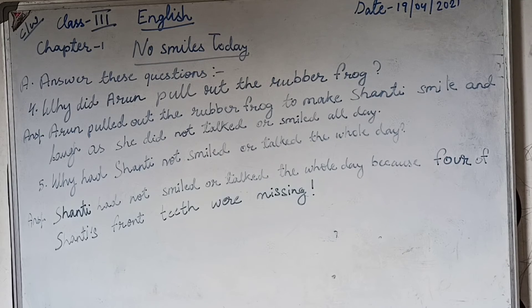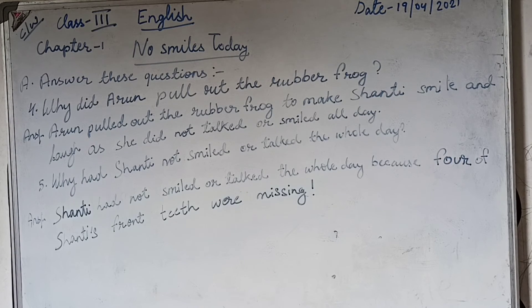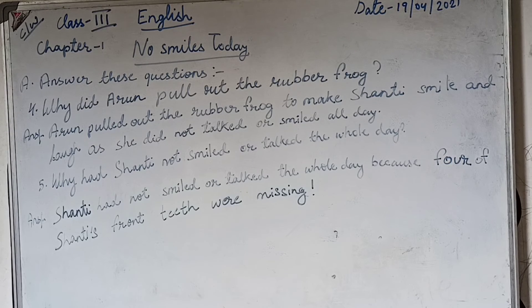Number 4: why did Arun pull out the rubber frog? Answer: Arun pulled out the rubber frog to make Shanti smile and laugh, as she did not talk or smile all day.